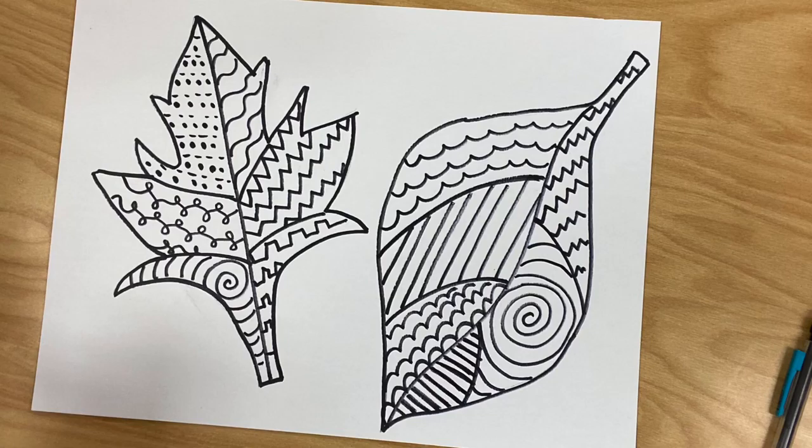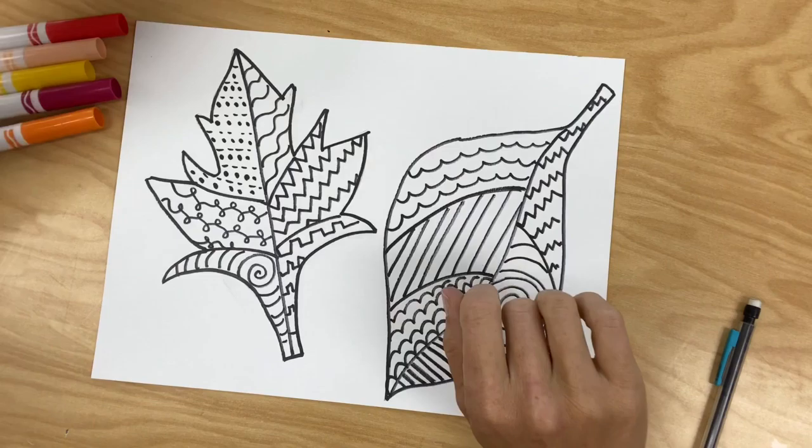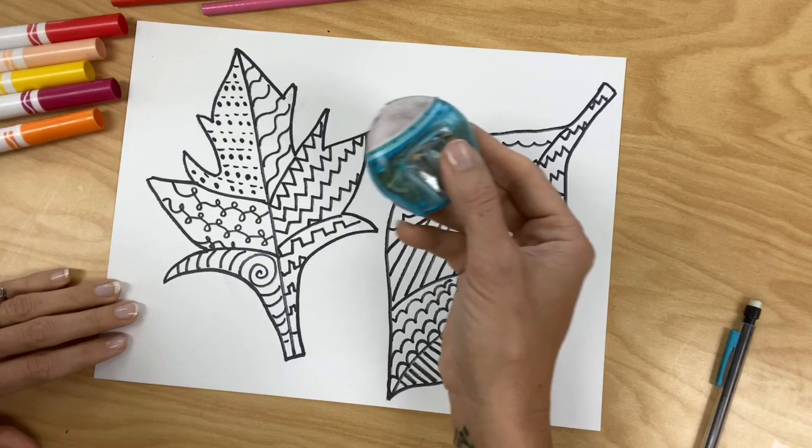You may use marker, crayon, or colored pencils to color the insides of your leaf. Each section with its line pattern is going to be a different warm color, or you could create a pattern using warm colors.